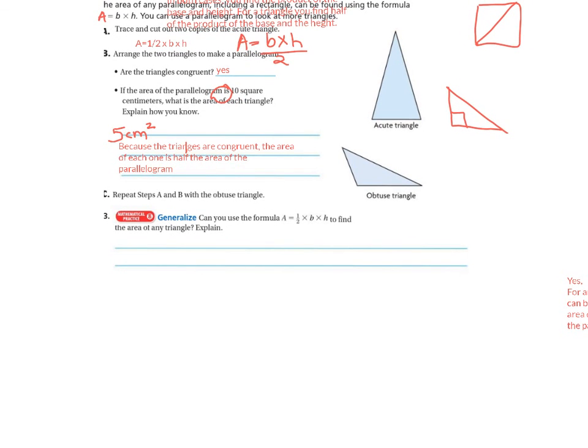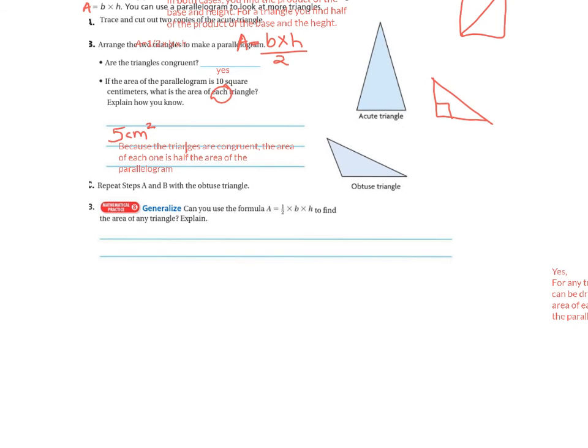So yes, for any triangle, a second congruent triangle can be drawn to form a parallelogram. The area of each triangle will be half of the area of the parallelogram.